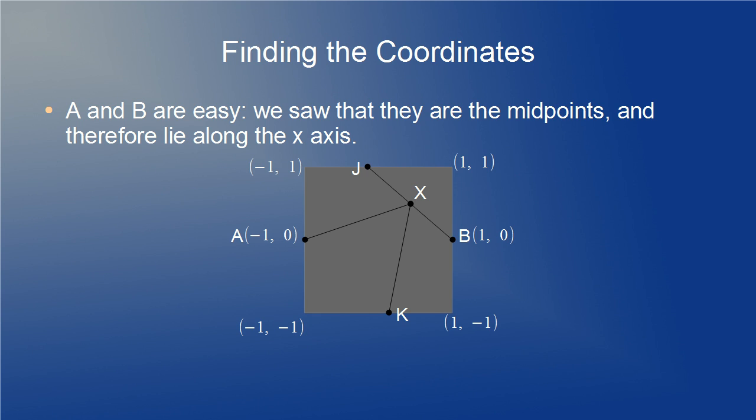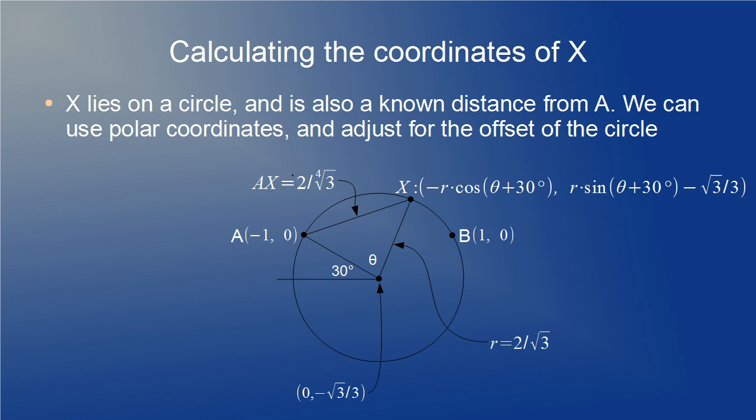X is going to be a little harder. So the approach I would like to use to find X is to bring back the circle from the Euclidean construction because the center of that circle makes a nice isosceles triangle with A and X along the circumference. It's also tilted 30 degrees from the horizontal because of the equilateral triangle that was constructed first. So by polar coordinates and adjusting for the offset of the center of the circle from the origin, we get a formula for the coordinates of point X.